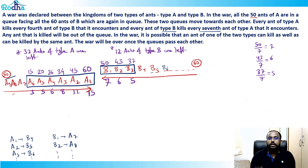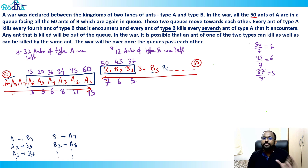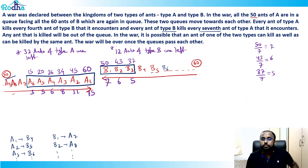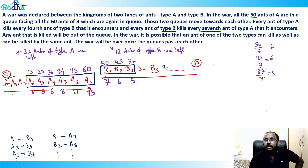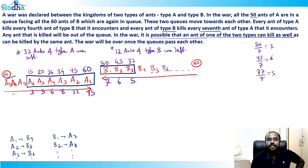So the key insight so far: a1 to a6 will never be killed in the war, and b1 to b3 will never be killed in the war. After this phase, 12 ants of type B and 32 ants of type A remain. Now the problem states that mutual killing is possible — an ant can both kill and be killed by the same ant.